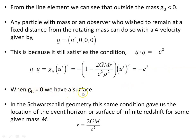When g_tt = 0, we have the condition for a surface — setting a function of the coordinates equal to zero specifies a surface. In the Schwarzschild geometry, this same condition gives the location of the event horizon or surface of infinite redshift for a given mass M. There, r = 2GM/c². In the Schwarzschild case, the event horizon and the surface of infinite redshift — the stationary limit surface — coincide and are one and the same thing.